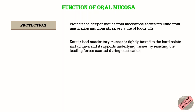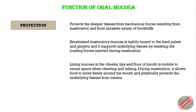The keratinized masticatory mucosa is tightly bound to the hard palate and gingiva and supports the underlying tissues by resisting the loading forces exerted during mastication. The lining mucosa in the cheeks, lips, and floor of mouth is mobile to create space when chewing and talking. During mastication, it allows food to move freely around the mouth and physically protects the underlying tissue from trauma.